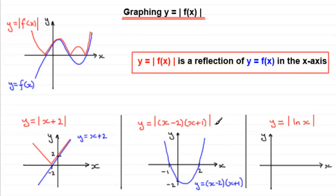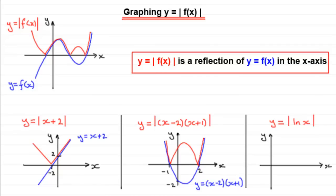For the mod graph, the sections where y is positive stay exactly the same. The section between x = −1 and x = 2, where y is negative, gets reflected in the x-axis. So that part of the parabola gets mirrored upward. The points at x = −1 and x = 2 are sharp corners. The y-axis value, which was −2, becomes its mirror image at +2.